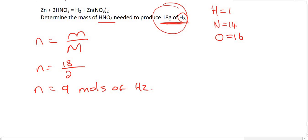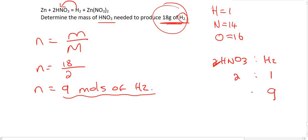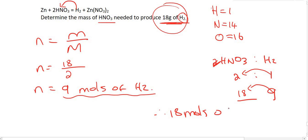Now we use the mole ratios to convert hydrogen into HNO₃. The ratio in the equation is 2 to 1 — HNO₃ to hydrogen. We have 9 moles of hydrogen, so we multiply by 2, giving us 18 moles of HNO₃.